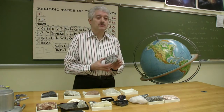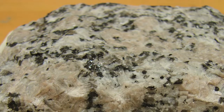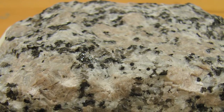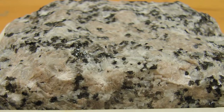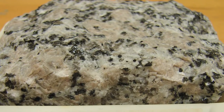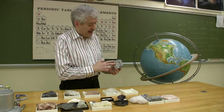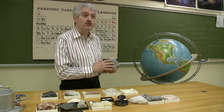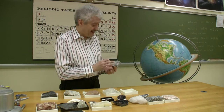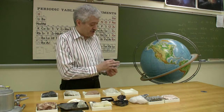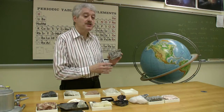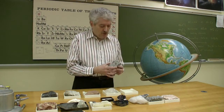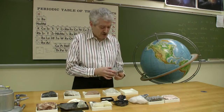Now this is what granite looks like. It's a mixture of different minerals. It's an example of an igneous rock, and it's a rock that cooled slowly from molten rock or magma, and therefore there was time for visible crystals to develop. So with a hand lens, you can easily identify some of the things that are present in the specimen. Now exactly what do we have in a typical granite?